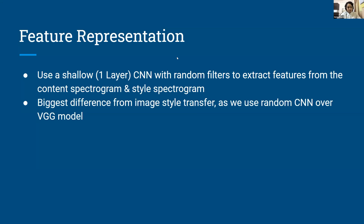As regards to the feature representation, we use one shallow layer of CNN with random filters to extract features from the content and style spectrograms, as opposed to using 2D filters in image style transfer. The biggest difference in our case is that we use random CNNs over the VGG model, because the style of audio signals is not well defined.